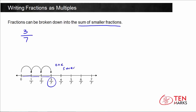1 seventh — you can write this as the fraction with 1 in the numerator and 7 in the denominator. Each time you make a hop, you're adding 1 seventh. How many of these sevenths are in the fraction 3 sevenths? You can see that there are 3. So 3 sevenths can be broken down into the sum of 1 seventh added to itself 3 times.